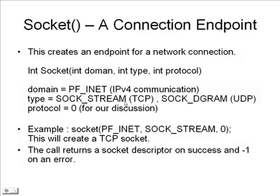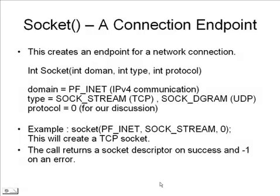For type, it can only be SOCK_STREAM or SOCK_DGRAM — in the first case a TCP socket and in the second case a UDP socket, depending on what we want to use. There can be many other types as well, but that is out of scope for this discussion. Protocol for this discussion is zero. An example initiation would be socket(PF_INET, SOCK_STREAM, 0), which creates a TCP socket. If everything goes well, a socket descriptor — an integer — is returned. If there is a problem, minus one is returned.